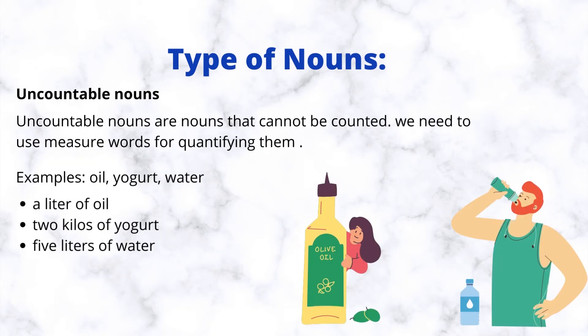Uncountable nouns are nouns that cannot be counted. We need to use measure words for quantifying them. Examples: oil, yogurt, water. A liter of oil. Two kilos of yogurt.